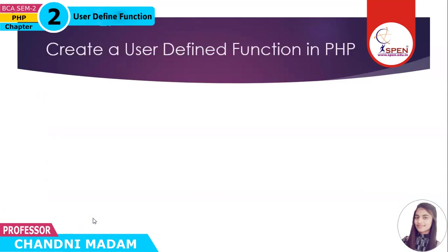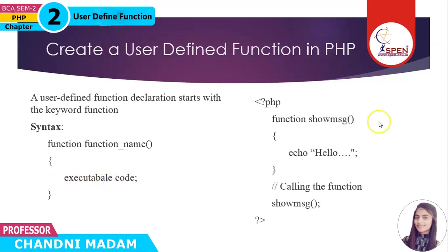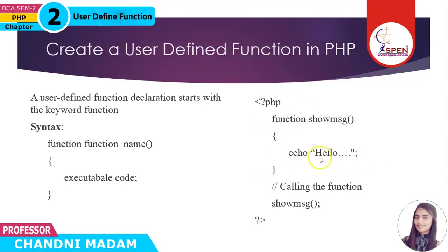Next is how to create a user defined function. We write the function keyword at the beginning. The syntax is: function keyword, then your function name, followed by parentheses, and inside the curly brackets we write the code that is used repeatedly in your program. For example, function showMessage — message is the function name and inside is the code. Whenever showMessage is called, that code executes and prints hello.